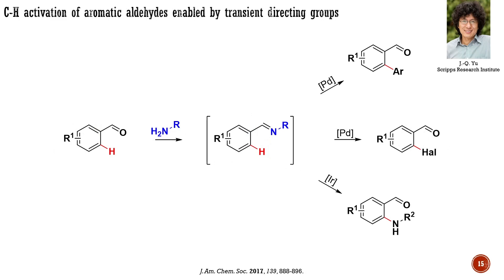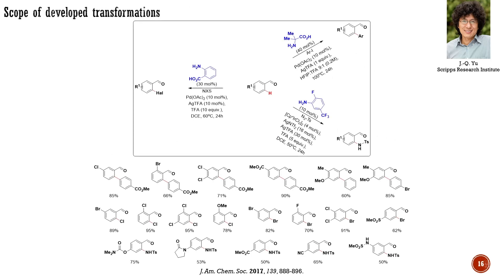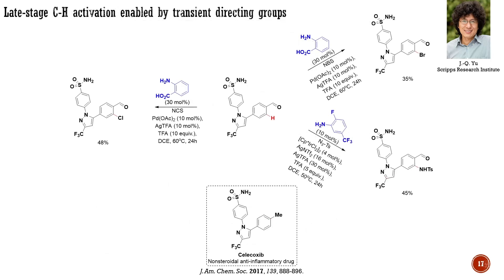The group led by Yu from the Scripps Research Institute was among the first to develop this chemistry. In their recently published work, they identified three different transient directing groups for metal-catalyzed C-H halogenation, arylation, and amination reactions, all based on in situ Schiff base formation between the starting aldehyde and transient directing groups, including various anilines and amino acids. The developed conditions tolerate numerous reactive functional groups, with above-average yields. Notably, this approach was extended to late-stage C-H functionalization of an analog of the commercial drug Celecoxib, a non-steroidal anti-inflammatory drug and one of the top-selling drugs in the world.